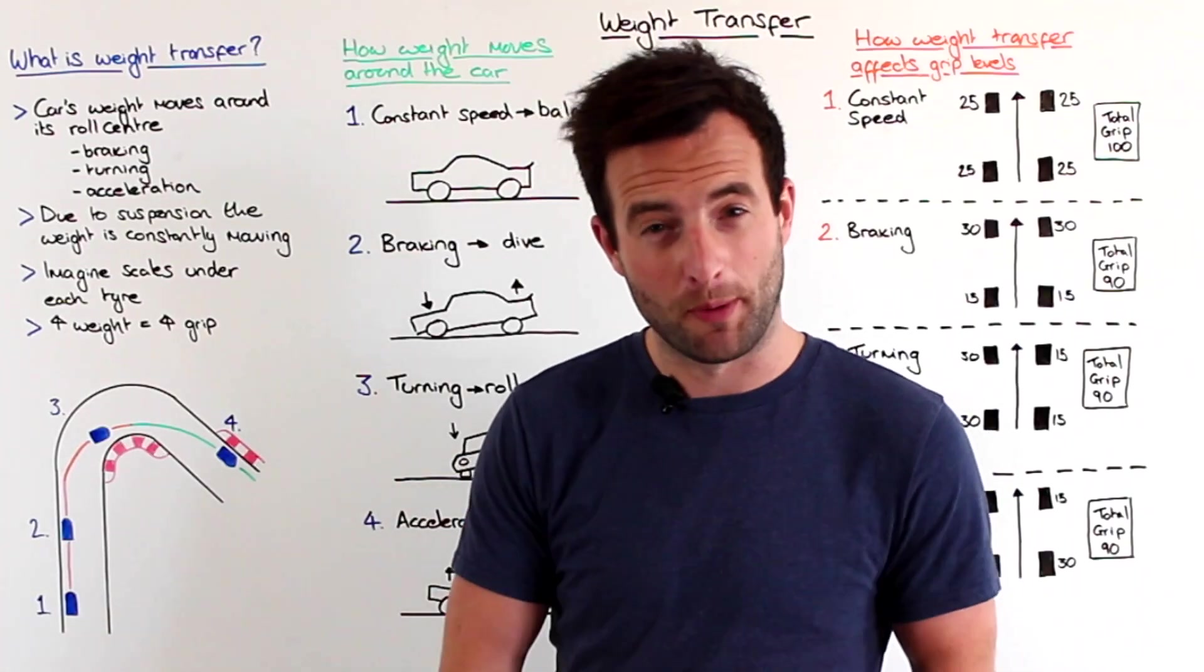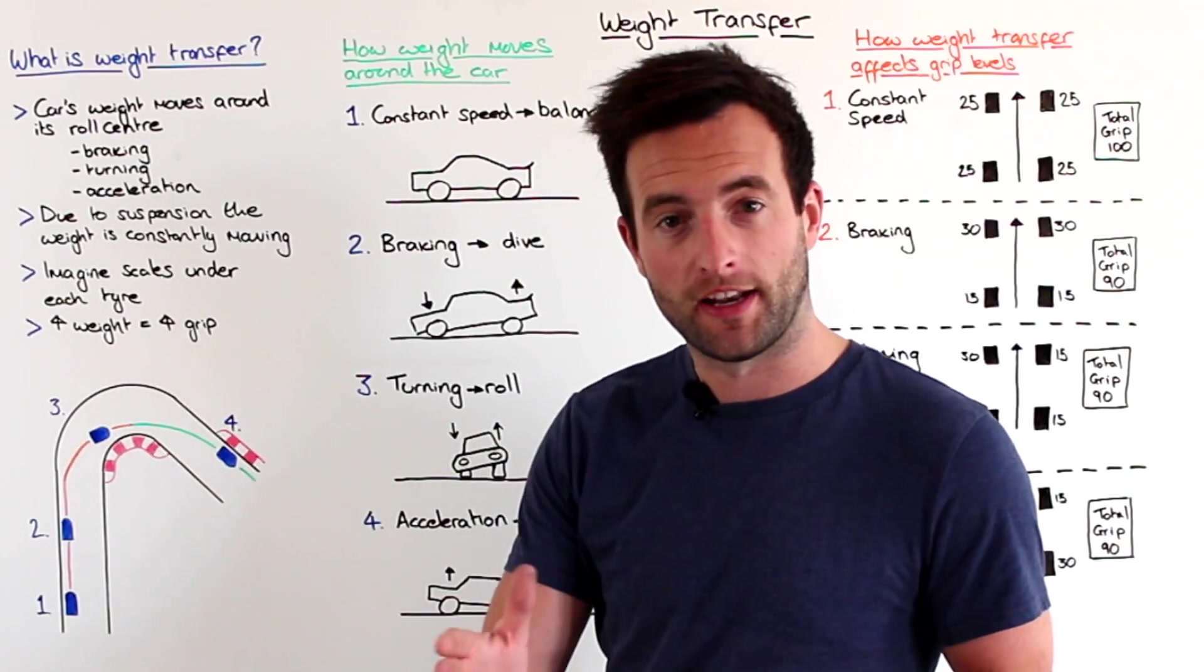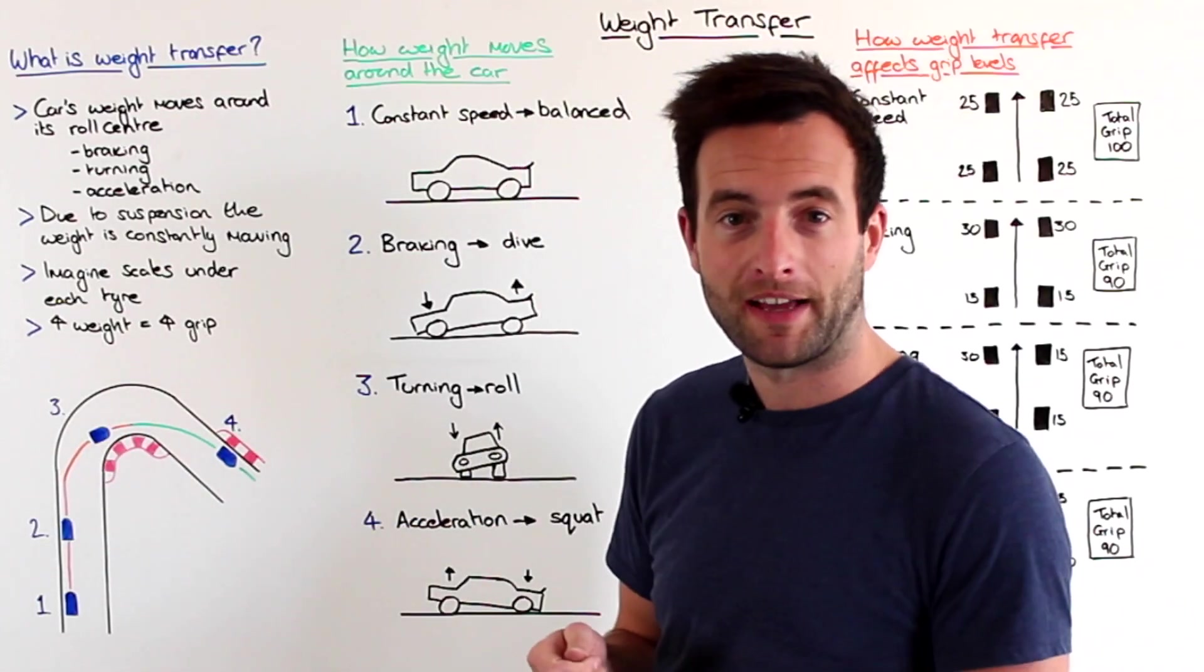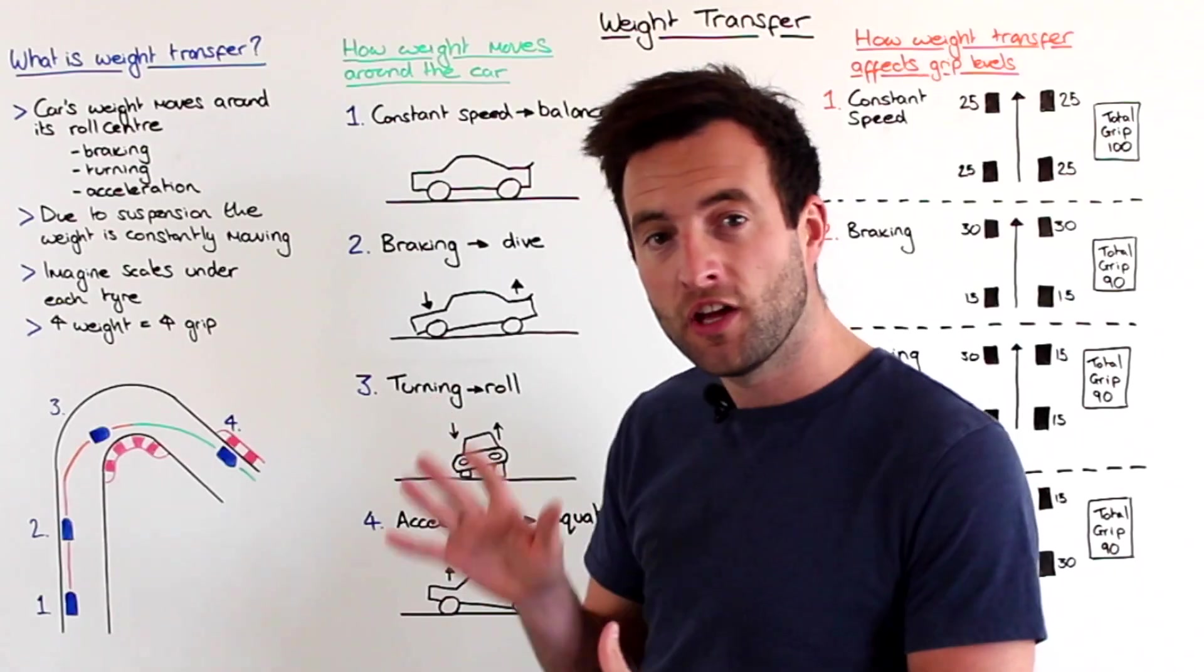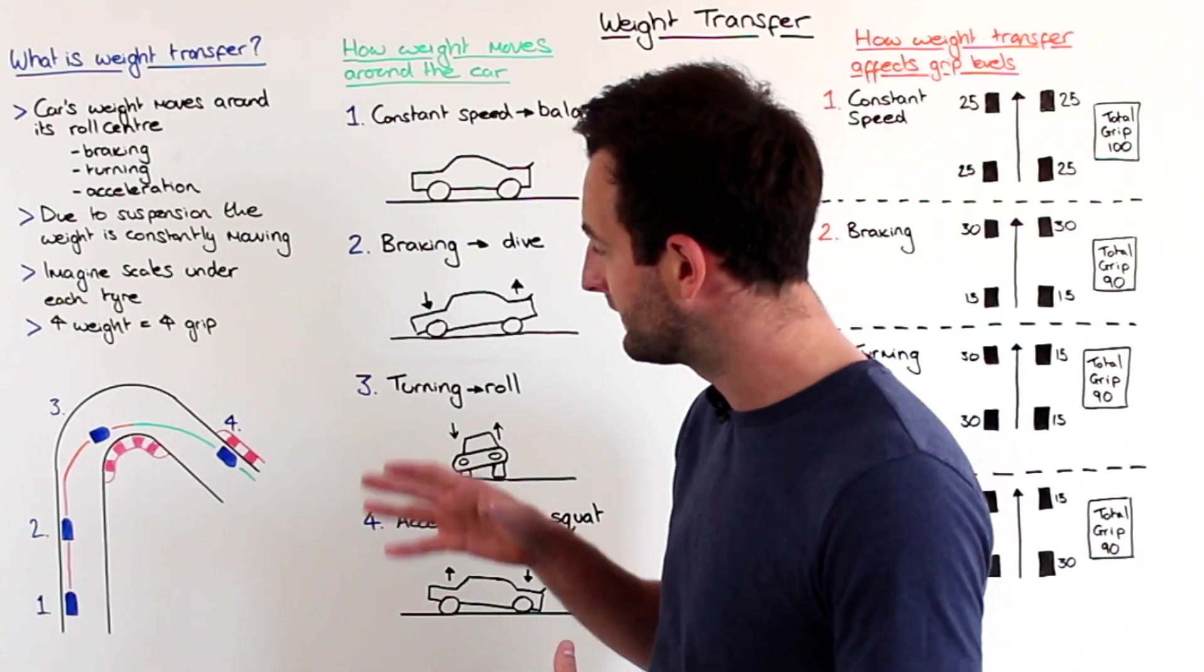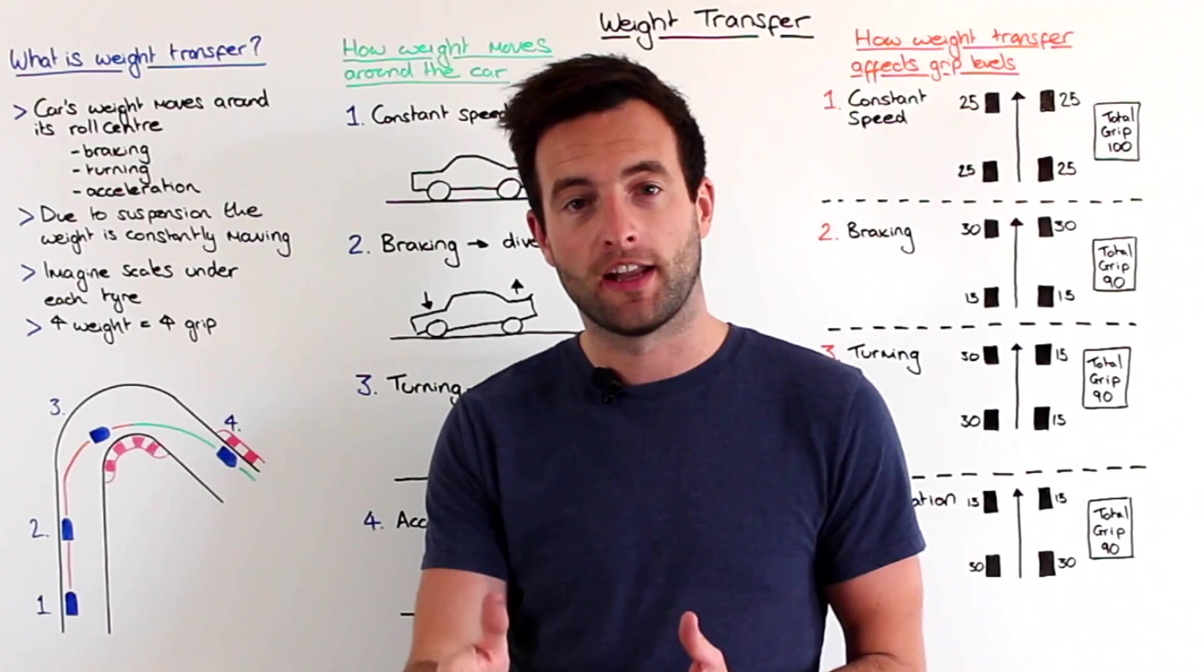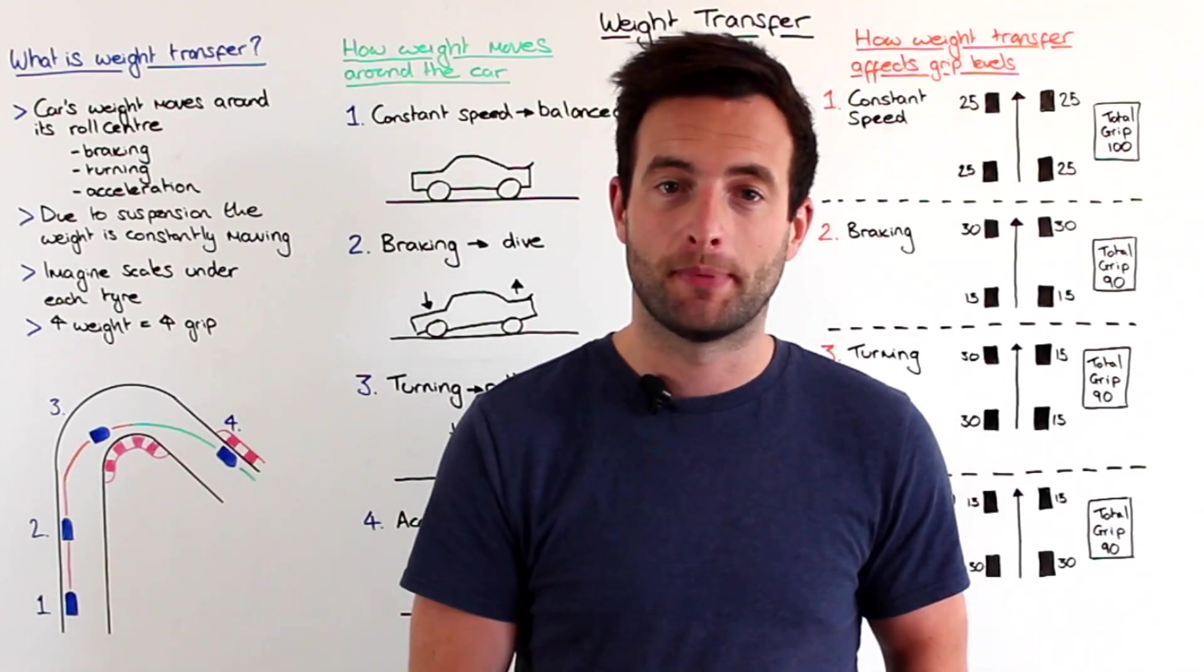Number two is where we're completely on the brakes in a straight line. Number three is where the car's turning at its maximum and it's at a constant speed once again just before we get back on the accelerator. And number four is when the car's again in a straight line and accelerating completely out of the corner.